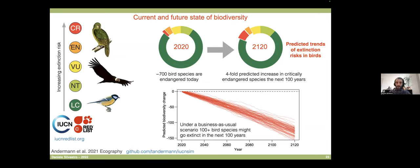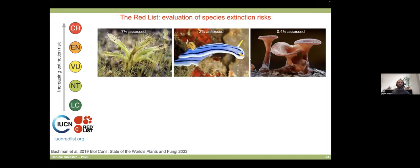The problem is that less charismatic groups are not assessed to the same extent. For plants, only 7% have been assessed by the IUCN — partly because there may be 350,000 flowering plant species. For invertebrates, only 2% are assessed. Fungi: we know almost nothing about their conservation status so far.